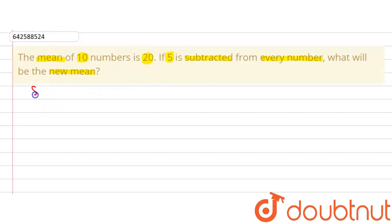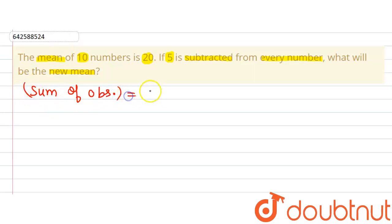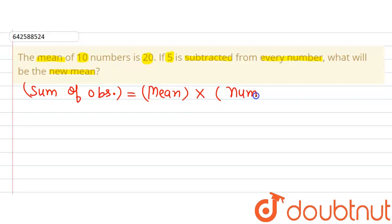The formula we are going to use is for the sum of observations when we are given the mean and the number of observations. Sum of observations equals mean of the observations multiplied by number of observations.